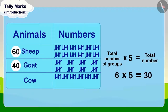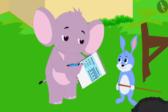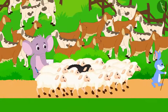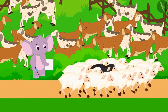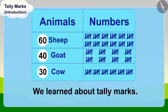Appu has a total of thirty cows. He thanked Bunny for telling him about tally marks and gave him his sheep to graze. Children, in this lesson we learned about tally marks. In the next video, we will learn more about it through some interesting examples.